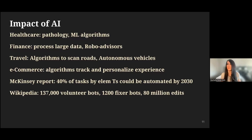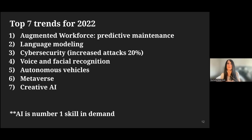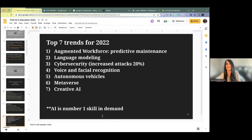Wikipedia has volunteer bots — if a human editor was told they had to do 80 million edits, you'd wonder how much time you'd have. Wikipedia has fixer bots and volunteer bots that go through and do all those edits. Here are some top AI trends for 2022: voice or facial recognition on your phones, cybersecurity. In the chat, why do you think there was an increase in attacks? Think about what's happened since 2020. It's because so many people relied on technology during the pandemic to keep learning and work going, which opened up higher usage and a lot more breaches — creating cybersecurity needs.